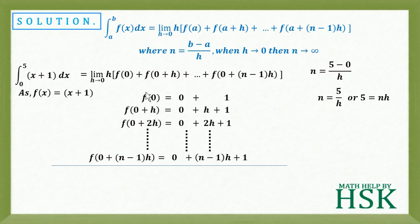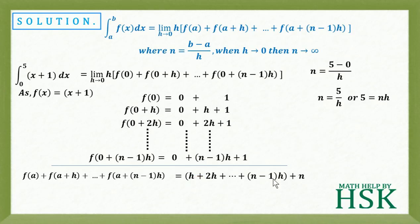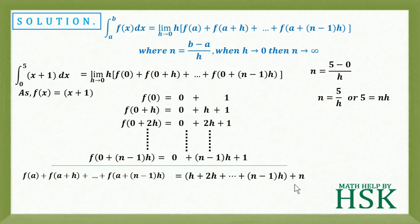Summing all terms f(a) + f(a+h) + ... + f(a+(n−1)h): the zero contributions add to 0; the h-terms give h + 2h + ... + (n−1)h; and the constant 1 added n times gives n.